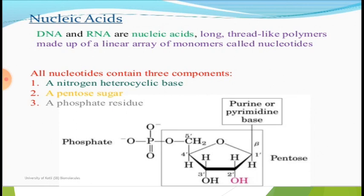As we discussed in the previous slide, the three components and building blocks are: first, the organic bases labeled as purines and pyrimidines; second, the pentose sugar involved; and third, the phosphate group involved.